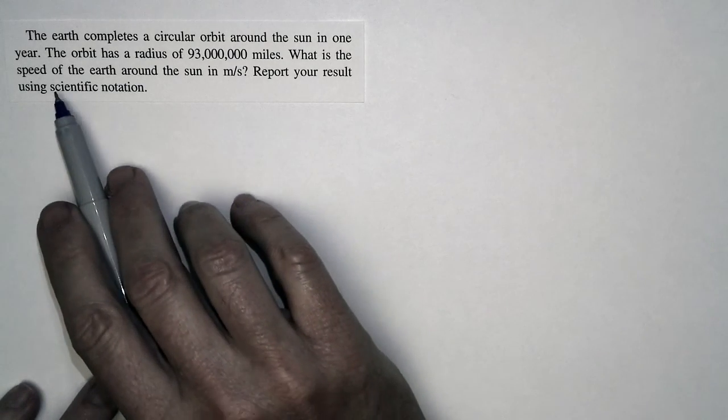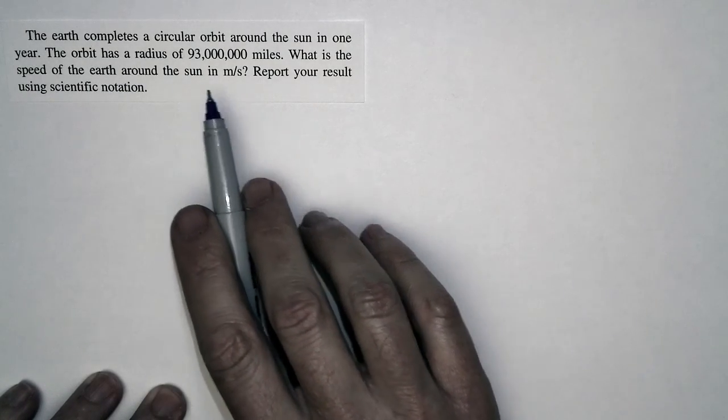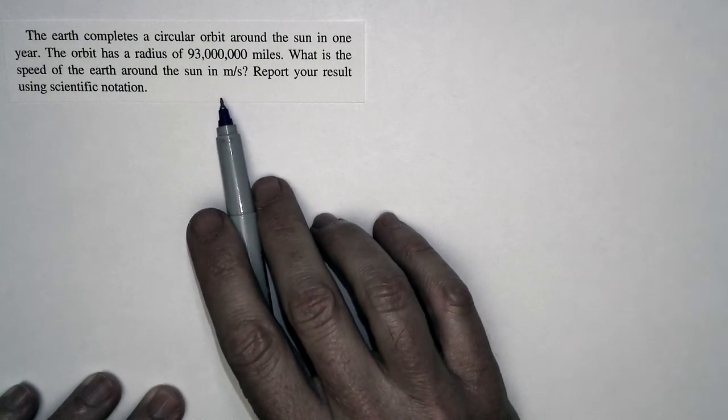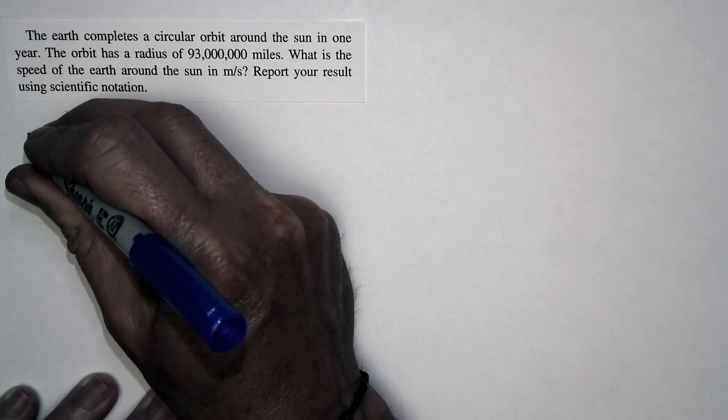We're asked to find the speed of the Earth in its orbit around the Sun in units of meters per second. Now let's prepare to solve this problem.